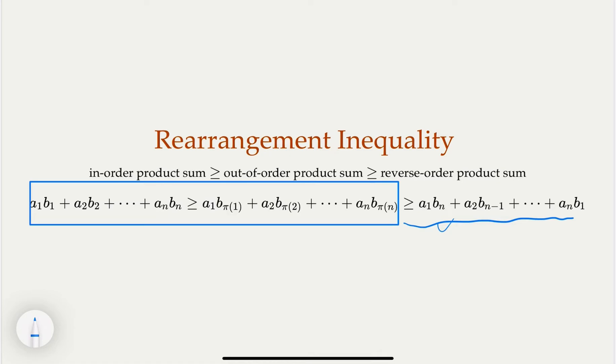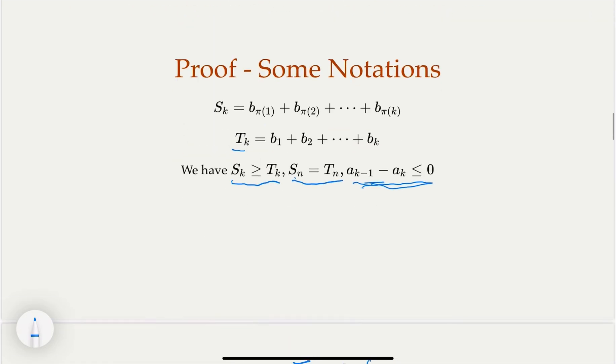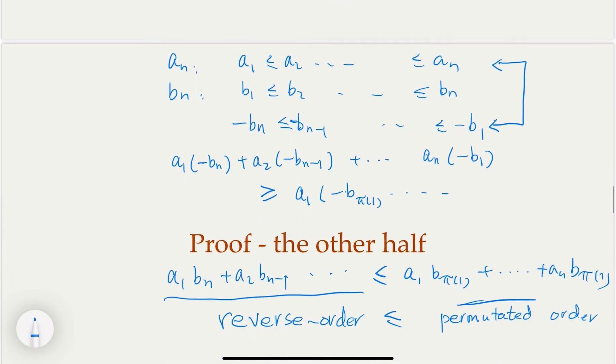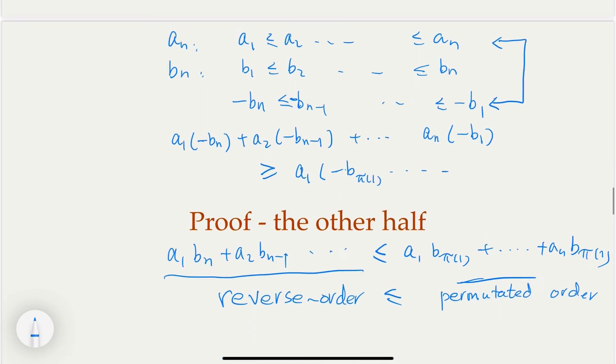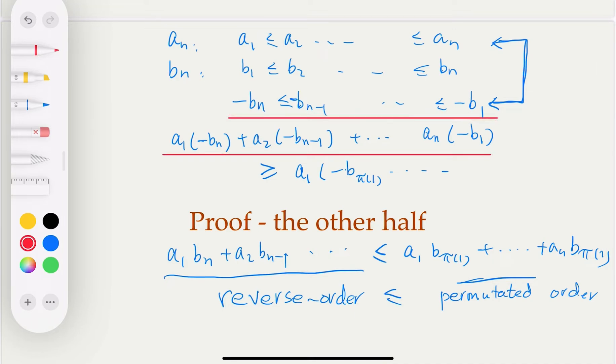So the second half is proven by using the first half. The trick here is you're going to use negative b_i as the sequence. You consider these two sequences. That's the trick. The highlighted one are the important steps.